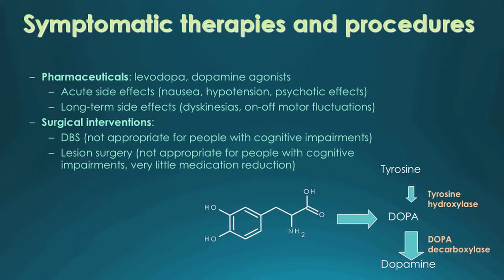There are a number of therapies and interventions that already exist. The interventions currently available generally treat the symptoms — they don't try to slow disease progression or repair the brain. Pharmaceuticals like levodopa or dopamine agonists work very well in the majority of people, at least in the early stages, but they come with side effects: acute effects like nausea, hypertension, or psychotic effects, and long-term effects such as abnormal involuntary movements called dyskinesias, or loss of efficacy seen in on-off fluctuations.